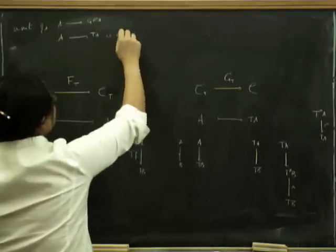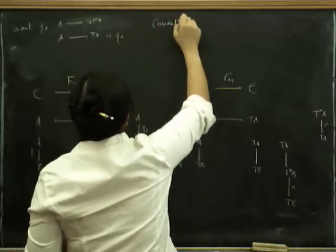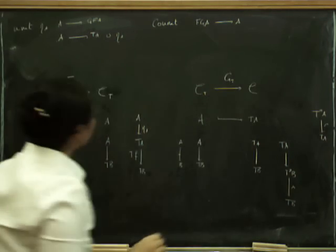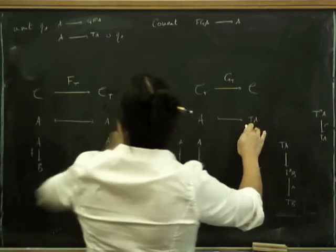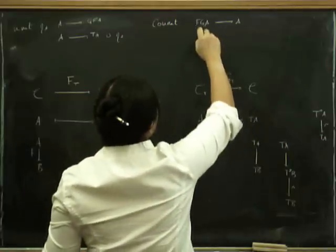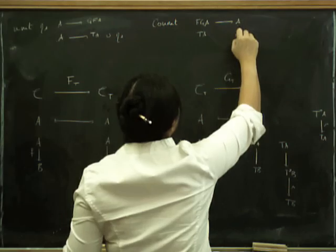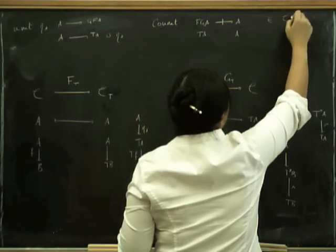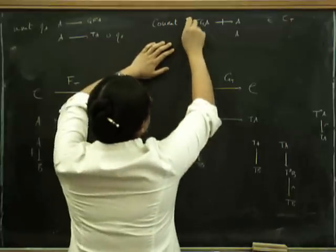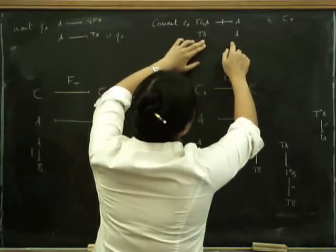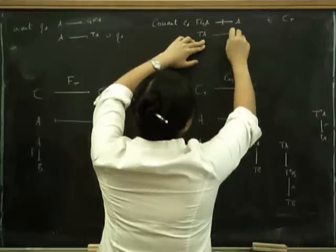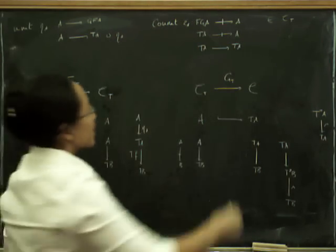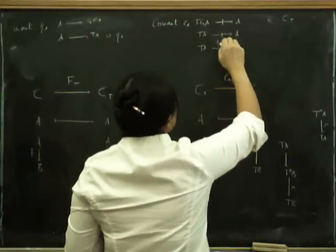The counit has to go from F_T(G_T(a)) to a. G_T(a) is Ta, and F_T of that is again Ta, while the target is a. But this has to be a morphism in the Kleisli category — so what we actually need is a morphism from Ta to a in the Kleisli category, which is just a morphism Ta → Ta in the actual category. That's just the identity on Ta.